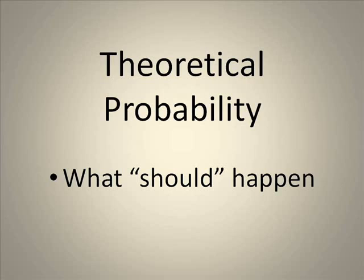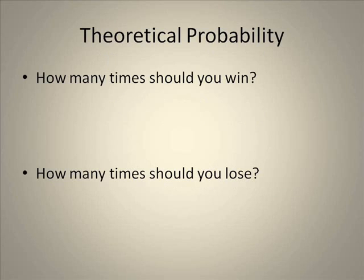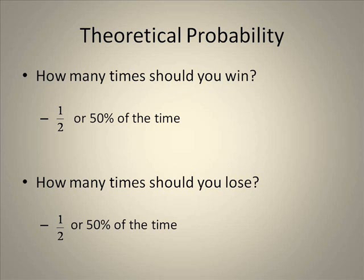It's good to have you back. I hope your battle scars are minimal. Now, at this point, each person should have their own individual information. But before we look at this, let's talk about a term called theoretical probability. Theoretical probability is what should happen, or what we expect to happen, before we begin our battle. In a fair game like this one, how many times should you win? How many times should you lose? Since there are only two options and winning is one of them, you should win one-half, or 50%, of the time. The same applies to losing. So the theoretical probability of winning or losing is one-half, or 50%, which means you should win or lose exactly half the time.